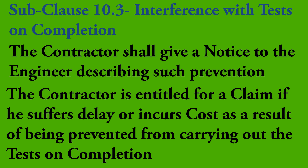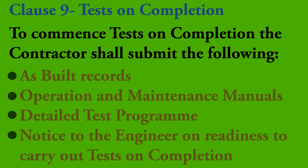Since sub-clause 10.3 is directly connected to tests on completion, we'll look at the relevant clause. Under sub-clause 9.1, the contractor shall submit as-built records and O&M manuals before commencing the tests on completion. The contractor shall also submit a detailed test program 42 days before the planned start date for tests on completion and obtain a no-objection notice from the engineer. Further, the contractor must notify the engineer 21 days before the date they are ready to carry out each of the tests on completion. To apply sub-clause 10.3, you must first check whether the procedure in clause 9 has been followed.